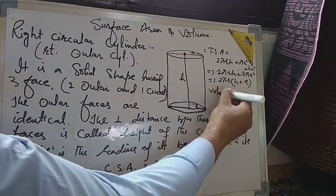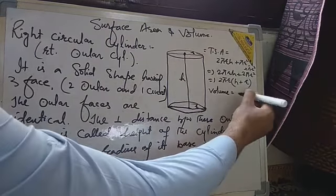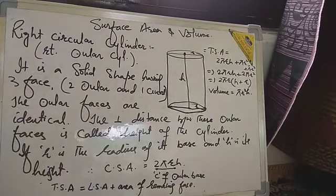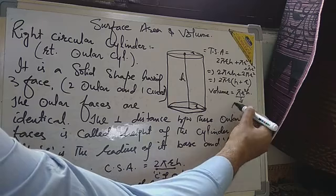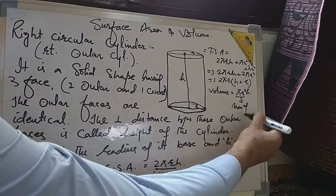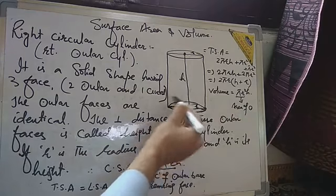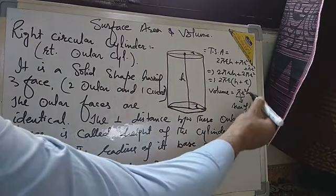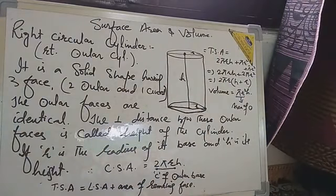Last but not least, volume. The volume of a cylinder is given by the formula πR²H. If you think for a moment, πR² means the area of a circle — this is the area of the circular base. When this area of the circular base is multiplied by the height, we get the volume of the cylinder.